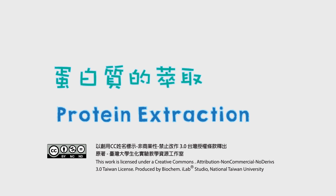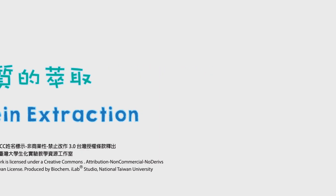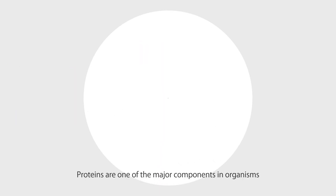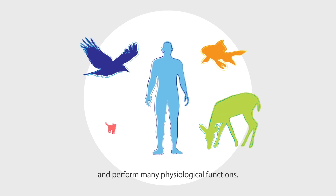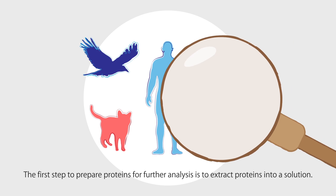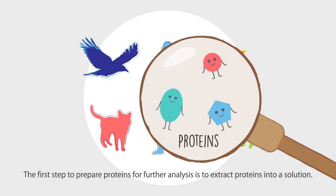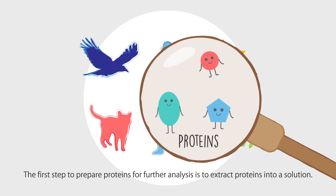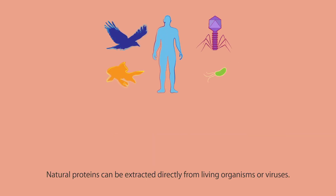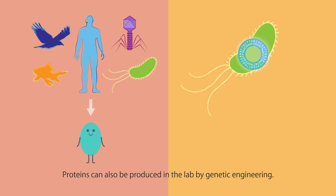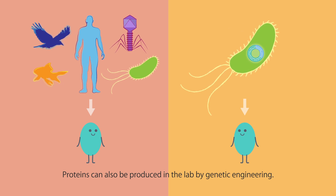Proteins are one of the major components in organisms and perform many physiological functions. The first step to prepare proteins for further analysis is to extract proteins into a solution. Natural proteins can be extracted directly from living organisms or viruses. Proteins can also be produced in the lab by genetic engineering.